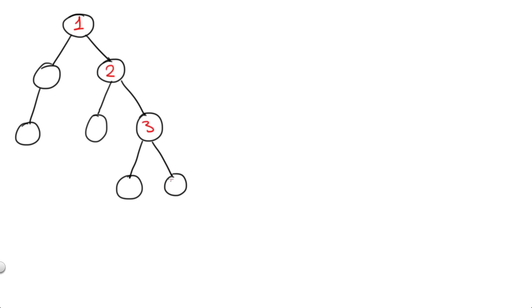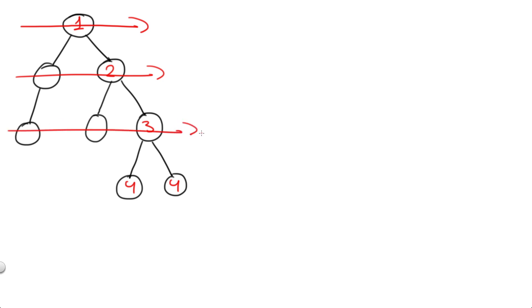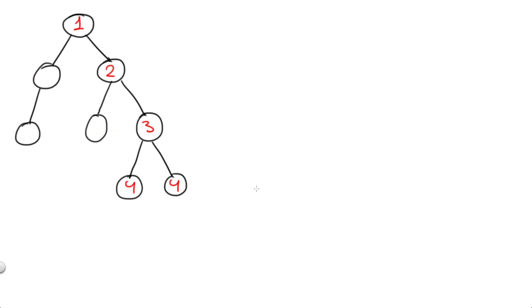So over here we have a binary tree. How are we going to find its depth? The depth would be the maximum path from the root to a leaf — so 1, 2, 3, and 4. Our answer should be 4. In a breadth-first search, we do a level order traversal: this is level 1, level 2, level 3, and level 4. We keep going until we reach the end, and level 4 is where we stop our BFS.